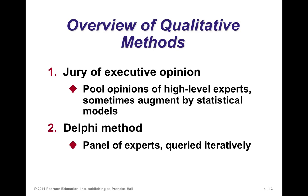A few qualitative models: the jury of executive opinion involves a group of high-level experts with experience. You ask their opinion and then combine the information — if you ask five people with different values, you could average them or get a sense from each one about the rationale for their particular predictions, and then decide.